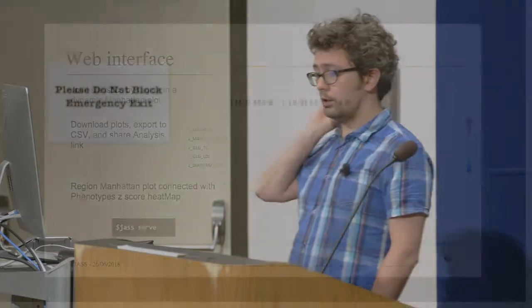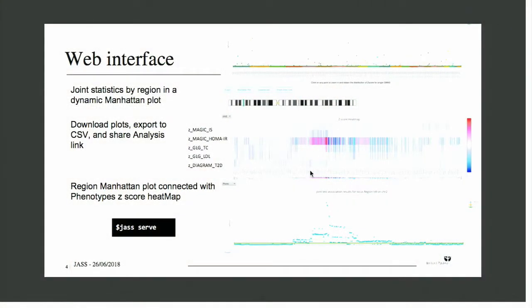But we also provide a web interface. And the web interface, when run locally, you can just launch it with JASS serve. And you will have a local web server that will enable you to browse here this Manhattan plot and zoom in on specific regions of the Manhattan plot.